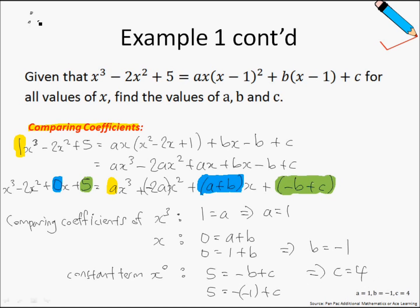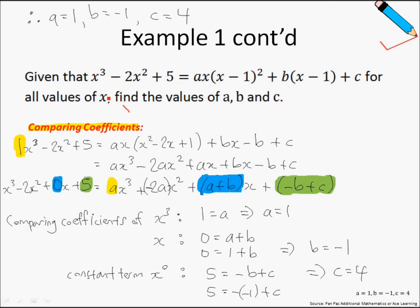So we conclude that a equals 1, b equals negative 1, and c equals 4. As you can see, these answers are the same as those obtained using the substitution method. Both the comparing coefficients method and the substitution method give the same answers, so it's really up to you which method you prefer.